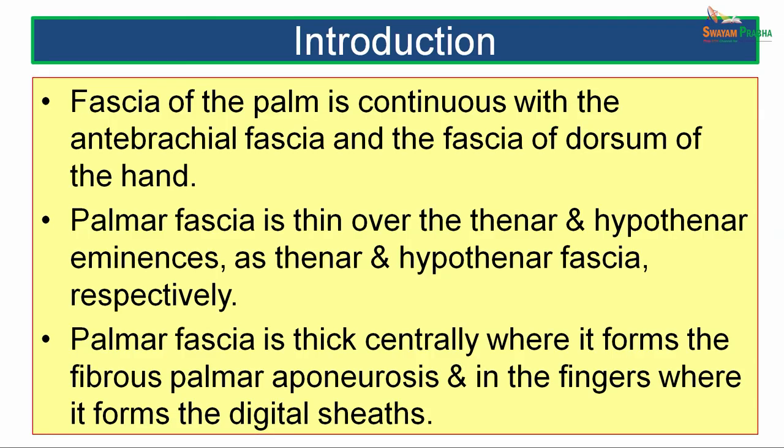It is these septae which divide the central part of the palm into the potential spaces — the mid-palmar space and the thenar space. The fascia of the palm is continuous with the antebrachial fascia proximally and also with the fascia of the dorsum of the hand. Palmar fascia is thin over the thenar and hypothenar eminences forming the thenar and hypothenar fascia respectively. Palmar fascia is thick centrally where it forms the fibrous palmar aponeurosis, and in the fingers too, it is thick where it forms the digital sheaths.